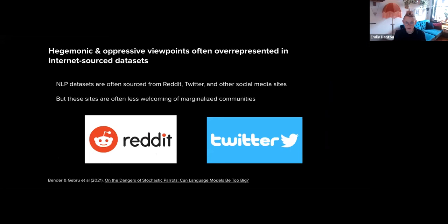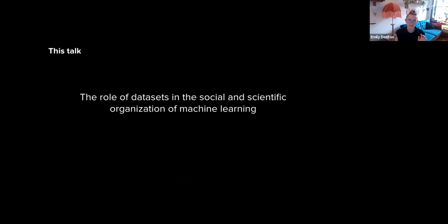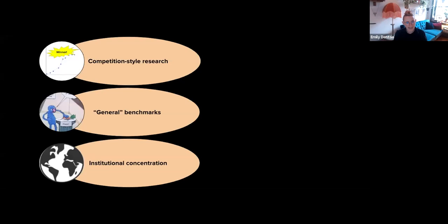Text datasets are not immune from these concerns either. A lot of these datasets pull from internet sources like Reddit or Twitter, and these sources can over-represent certain hegemonic viewpoints, in large part due to structural barriers that make these sites less welcoming for marginalized communities. That's a really quick summary of things that can go wrong with machine learning datasets — just to set the stakes for what gets embedded in these datasets and ultimately filtered into machine learning systems. The remainder of this talk will step back and focus less on individual datasets and more on the role that datasets play in the social and scientific organization of the field of machine learning.